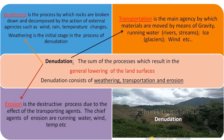Followed by weathering, the next parameter is transportation. Transportation is the main agency by which materials are moved slowly by means of gravity or running water — through rivers and streams — otherwise ice, meaning glaciers, or wind. Erosion is the last phase of denudation, which is a destructive process due to the effect of transporting agents, especially running water, wind, and temperature.